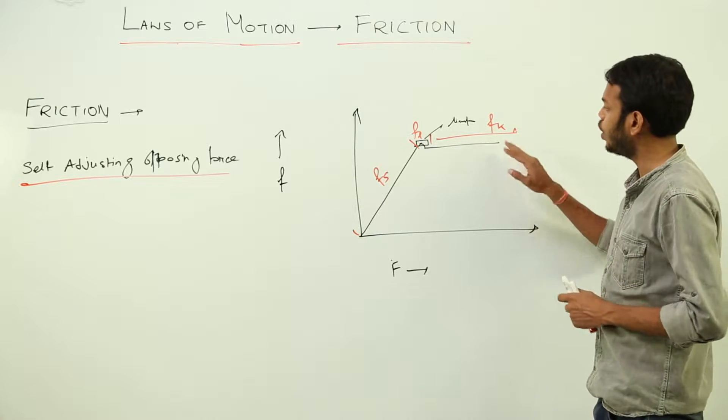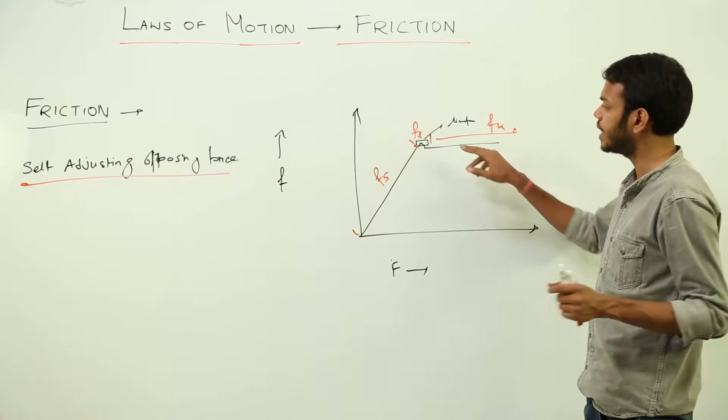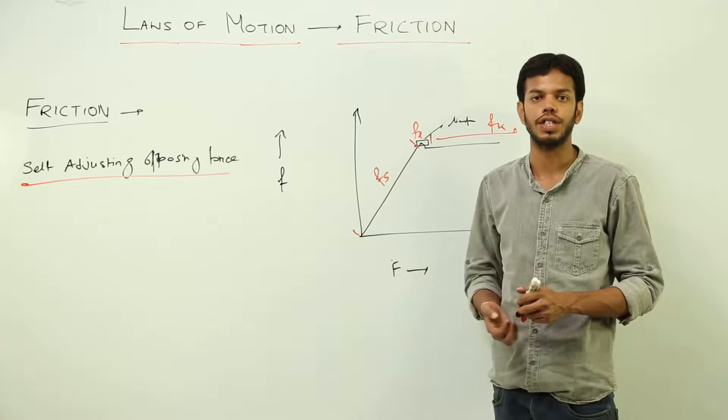There is this point that the value of kinetic friction is a bit lesser than the value of limiting friction, which is the highest value of static friction. Why?